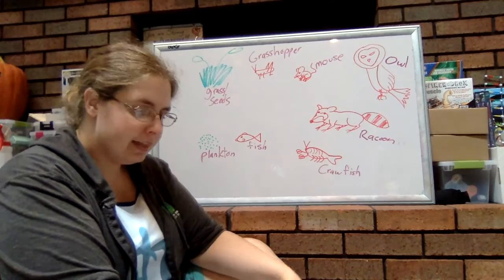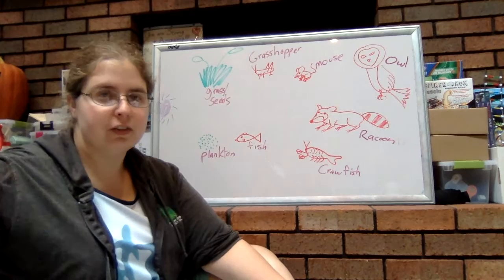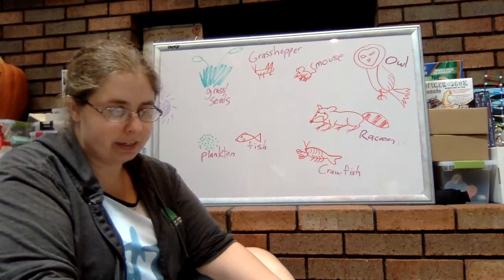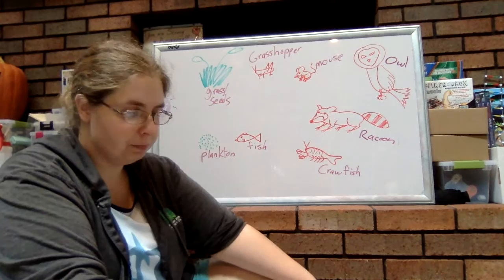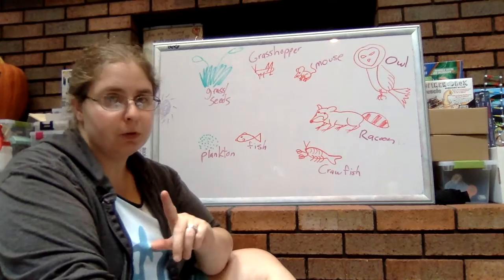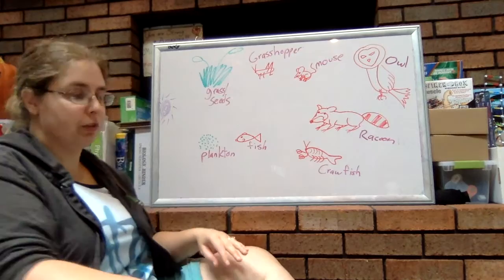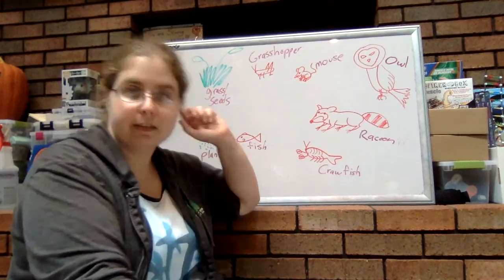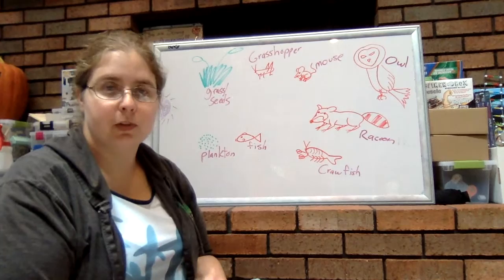Now, the thing about energy is it only flows in one direction through the ecosystem. We can draw this as either a food chain or a food web — we're going to be talking about both of them. But the energy always starts with either the sun, if it's photosynthesis, or a chemical compound, if it's chemosynthesis. We're going to be focusing on photosynthesis. And the sun provides energy to the autotrophs, the producers, like plants.